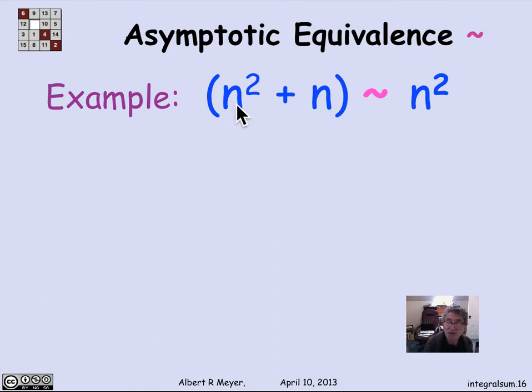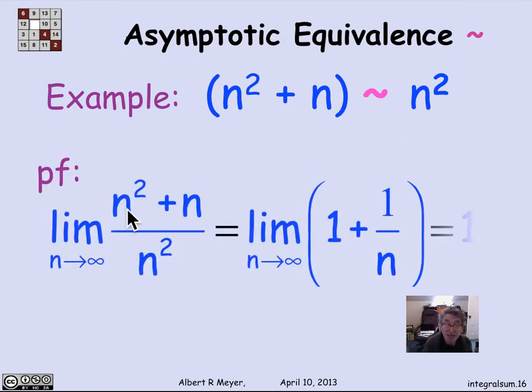Let's do an example. So the remark would be, for example, that n squared plus n is asymptotically equal to n squared. Why? Well, let's look at the limit as n approaches infinity of n squared plus n over n squared. It's the same as simplifying algebraically. The limit of 1 over 1 plus n, as n approaches infinity, that term goes to 0. Sure enough, the limit is 1. And so these two terms are asymptotically equal.